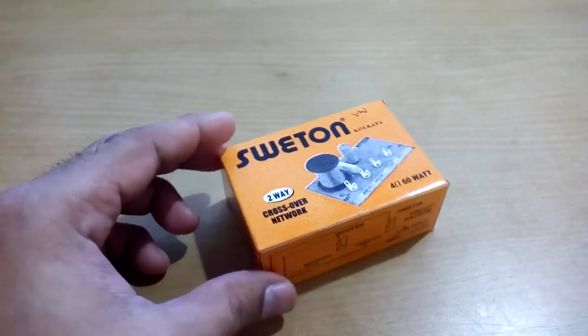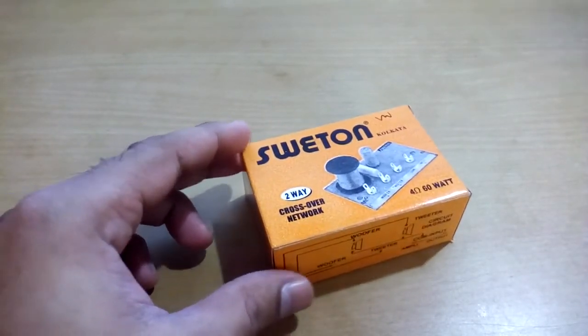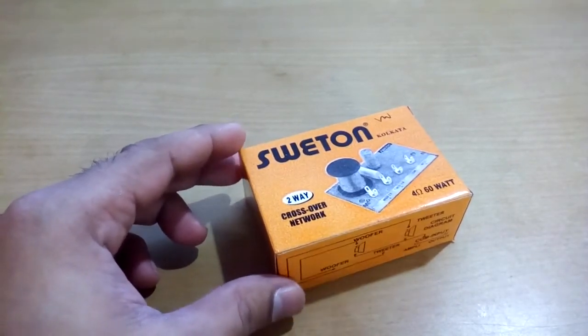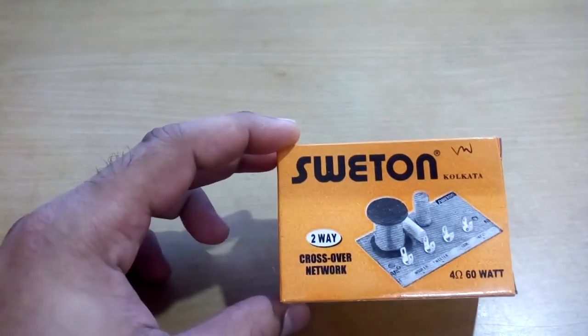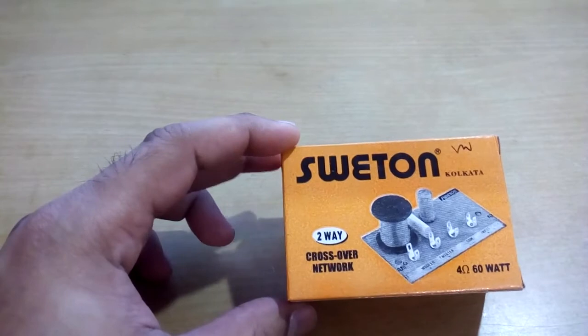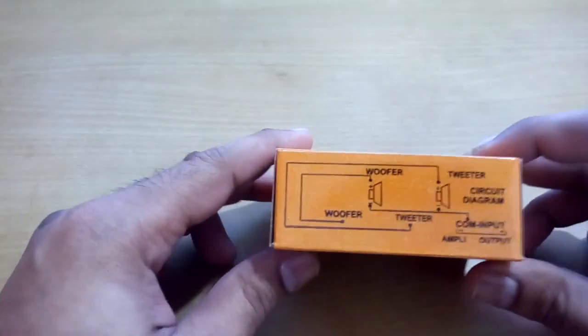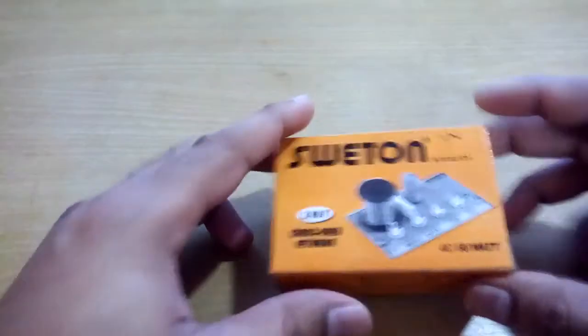So then I was thinking to show you the crossover - what it is and how it works for those who don't know yet. This is a two-way crossover, 60 watts, and here is the circuit diagram for woofer and tweeter.